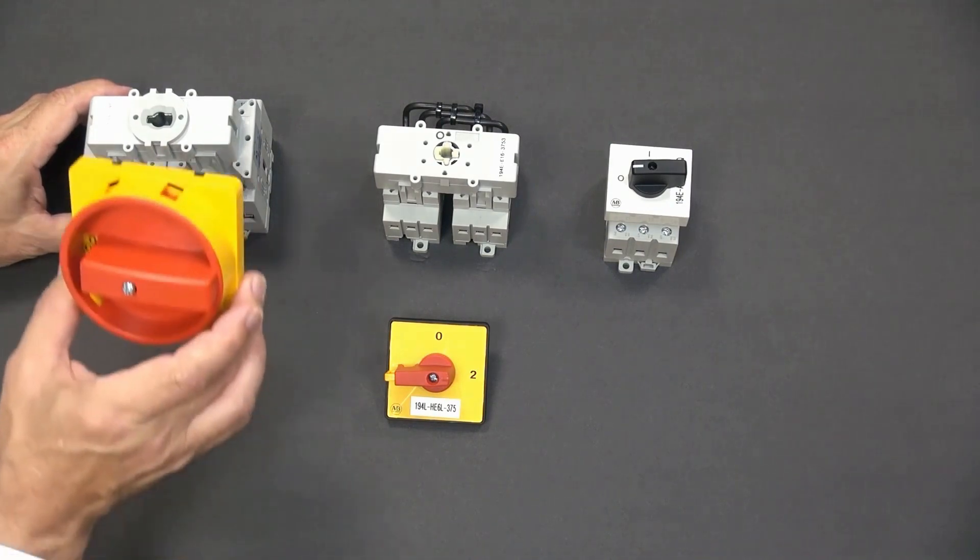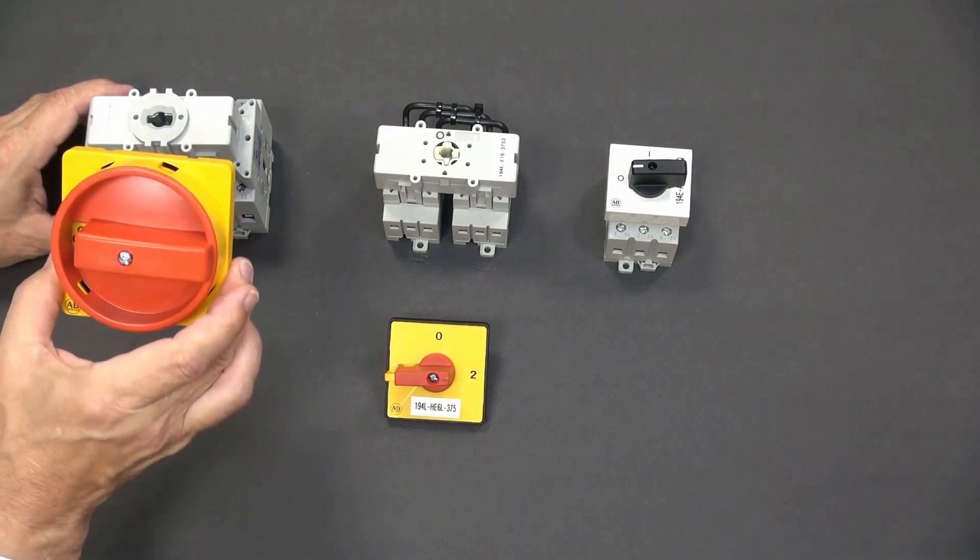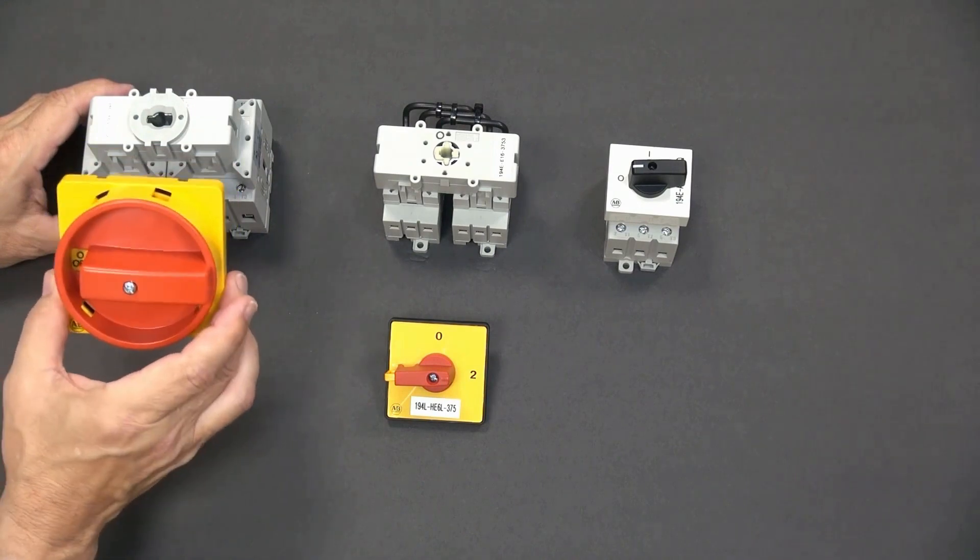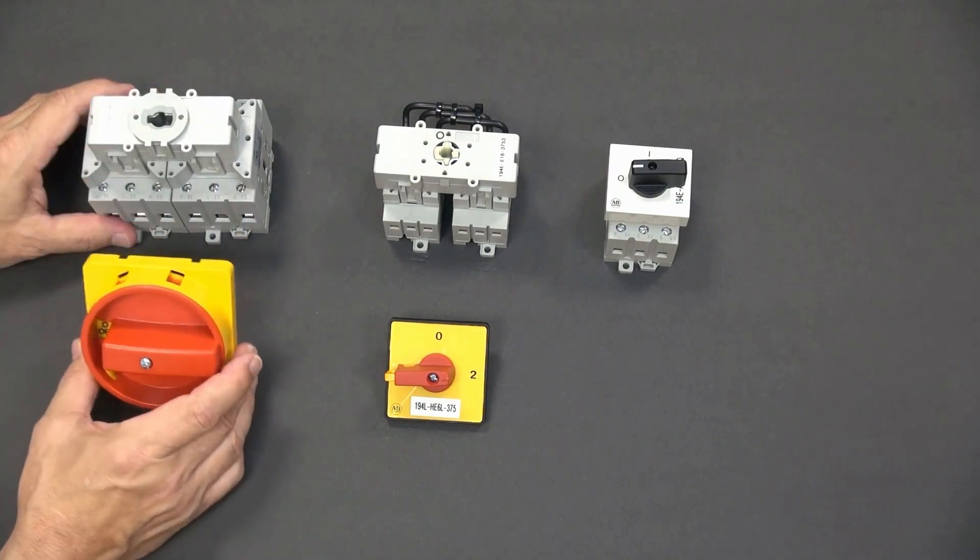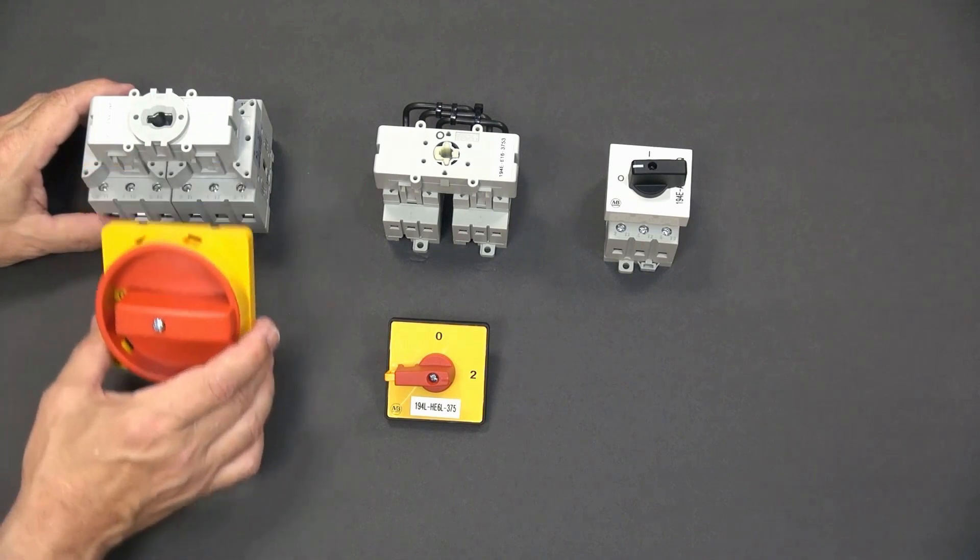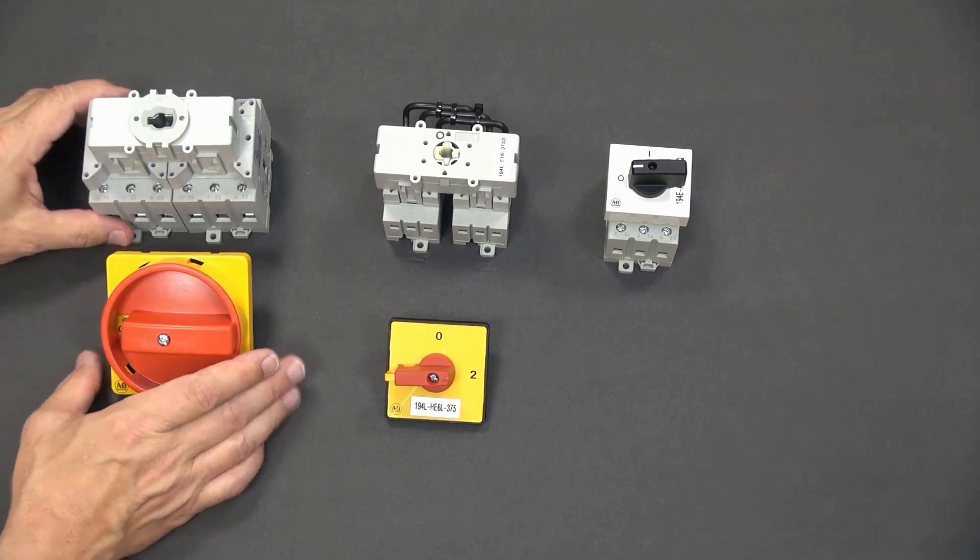Here we're applying the size 8 194L handle to accommodate the greater leverage required to operate the 63 amp switch. This switch comes in a panel and door mounted versions.